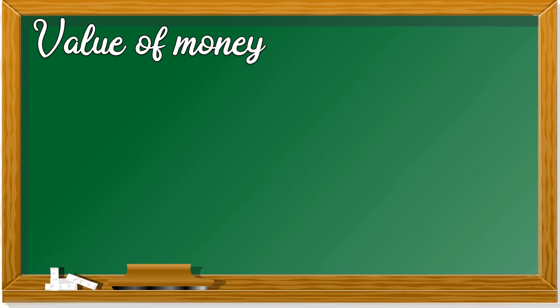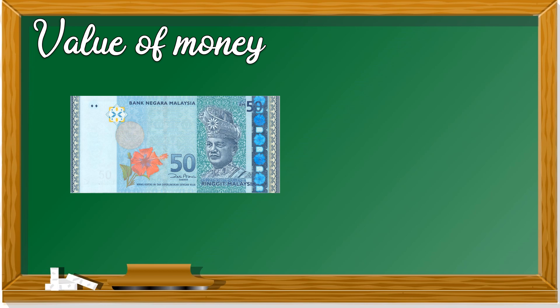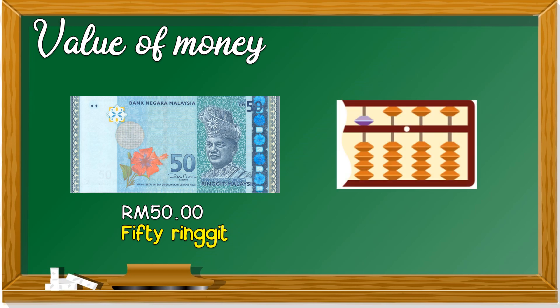We are going to look at the value of money. 50 ringgit. If you represent it in Abacus, it looks like this. 5, 0, 0, 0 — not 5,000. You see the dot? You put the dot here, so it's 50 ringgit. When you represent 50 ringgit in Abacus, you use 4 rows.